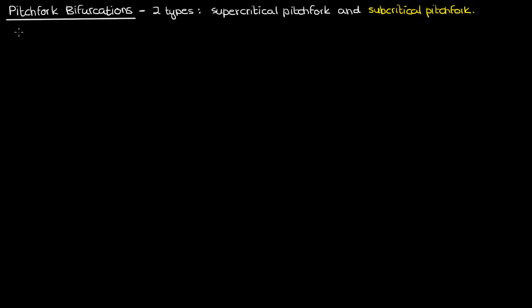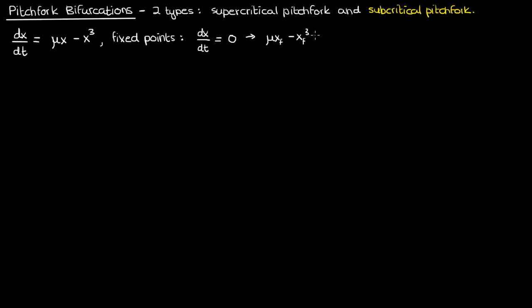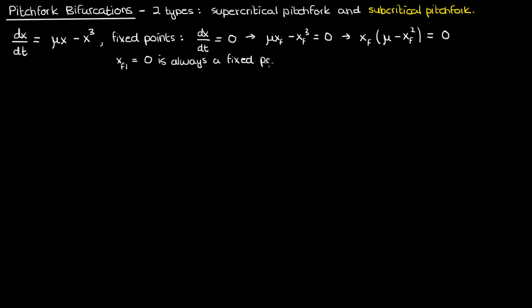Once we've done that, understanding subcritical pitchforks should come fairly naturally. Suppose we have a dynamical system of the form dx/dt = μx − x³. To find the fixed points of this dynamical system we set dx/dt = 0 and solve for x. We begin with a simple factorization, ending up with xf times (μ − xf²) on the left. From this factorization it's quite clear that xf₁ = 0 is always a fixed point.